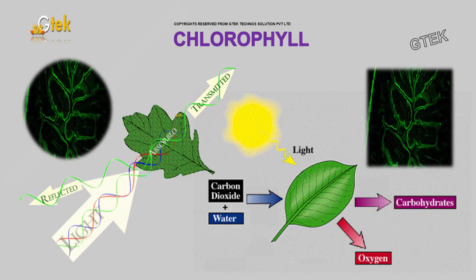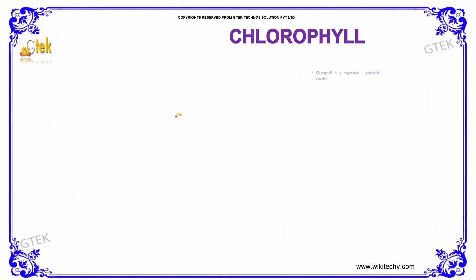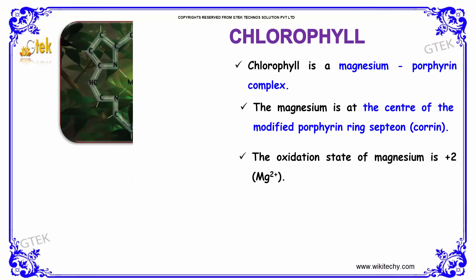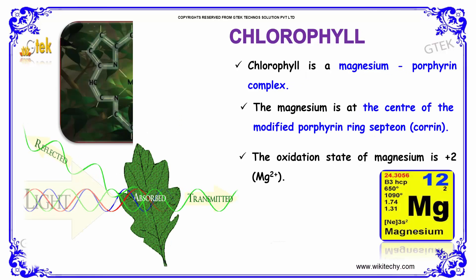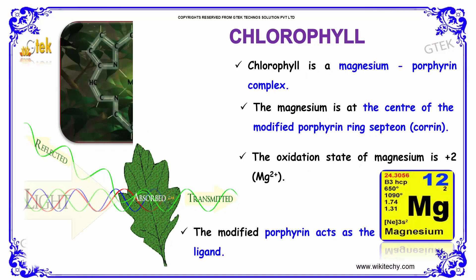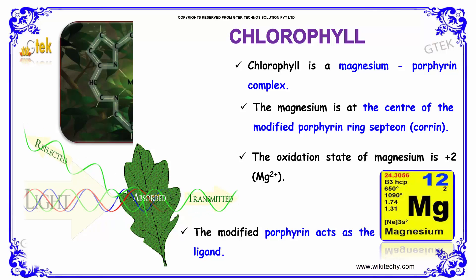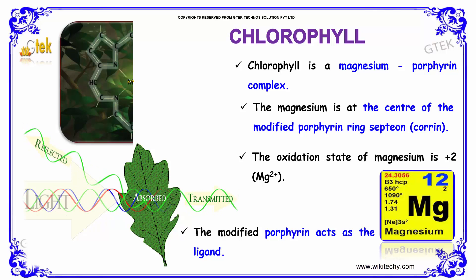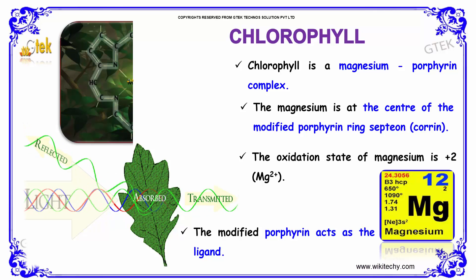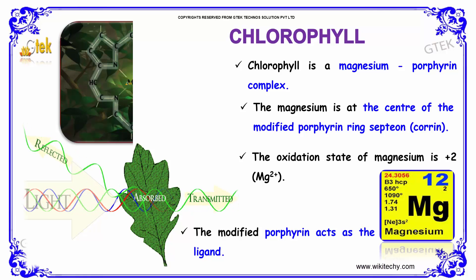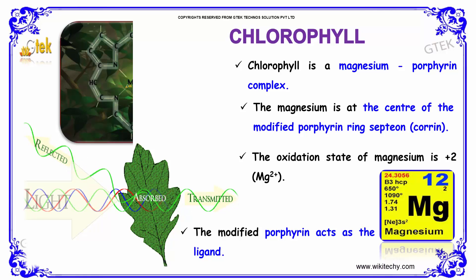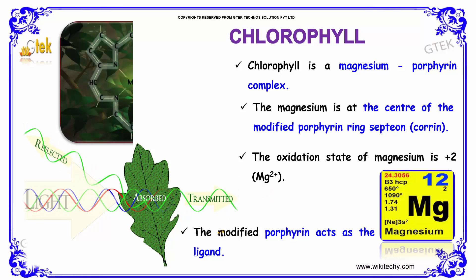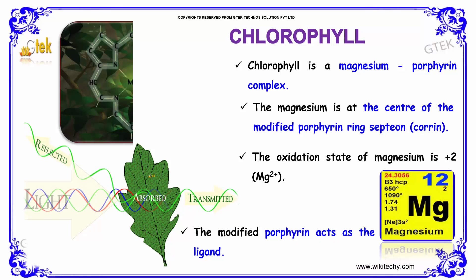Here is on the chlorophyll. Chlorophyll is a magnesium porphyrin complex. The magnesium is at the center of the modified porphyrin ring, known as a chlorin. The oxidation state of magnesium is plus two, and the modified porphyrin acts as the ligand.